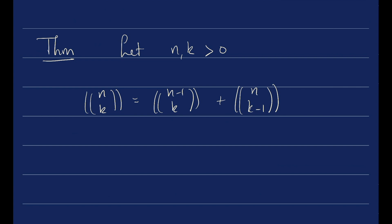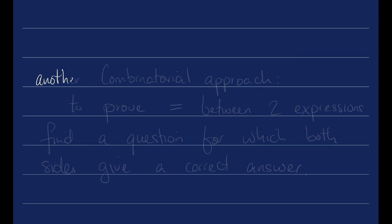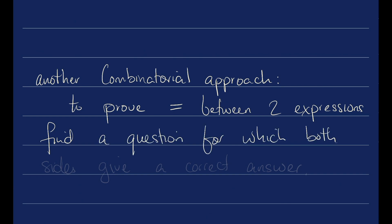Before we talk about the proof of this, I want to highlight that the proof is going to follow another combinatorial approach, which is when you're trying to figure out if two things are equal to each other. To prove equality between two expressions, one way of proceeding is find a question for which both sides of the equality give a correct answer. So if both sides of the equality correctly answer the same question, they must be equal to each other.